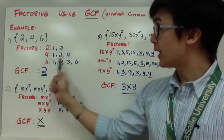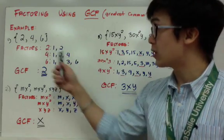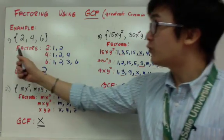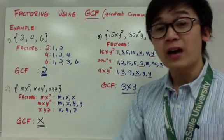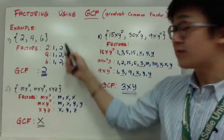So each one of them, when you multiply two numbers to each other, it will give you 2, 4, or 6 respectively. Now, we need to find the greatest common factor or the highest number that could divide 2, 4, and 6. And in this case,